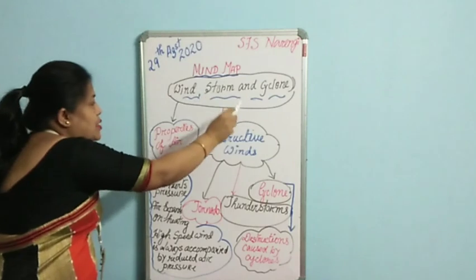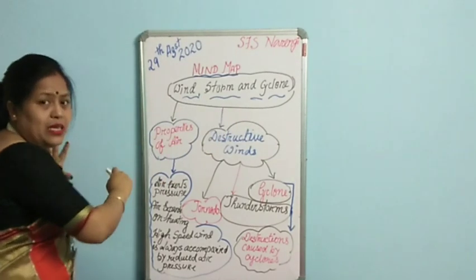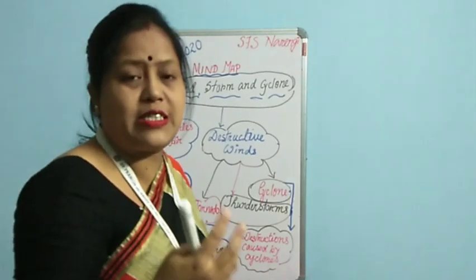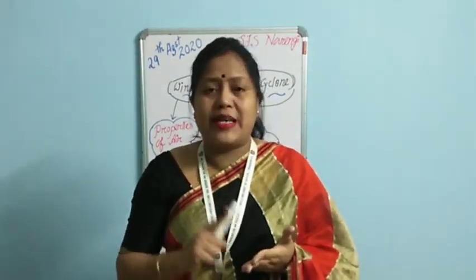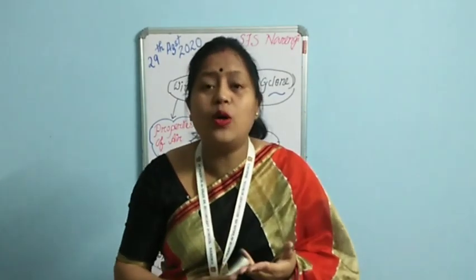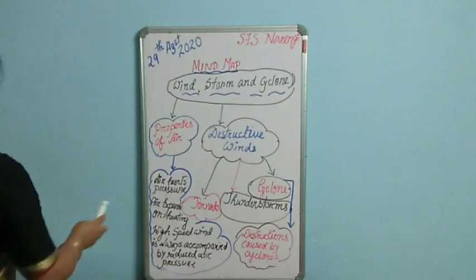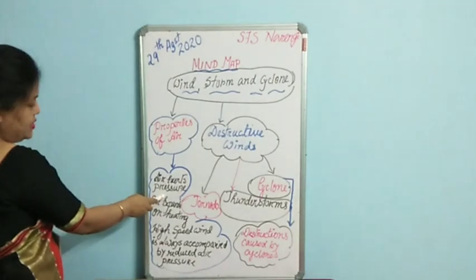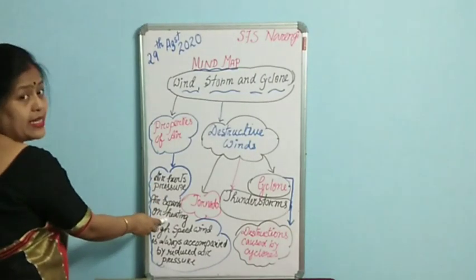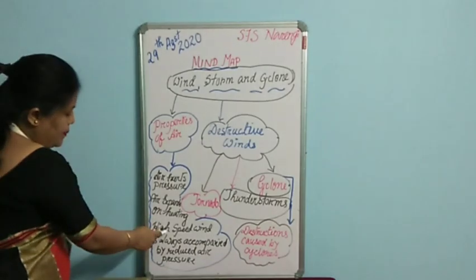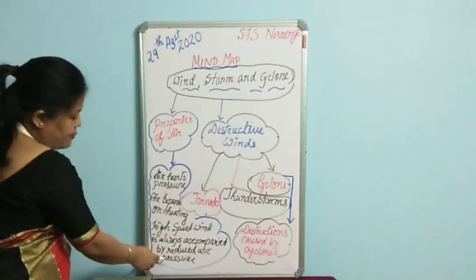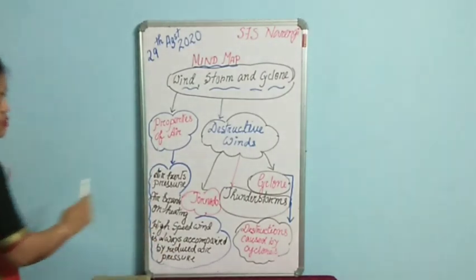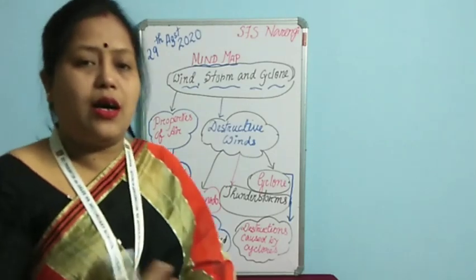First in this chapter we started with the properties of air — the characteristics of air. In that topic we discussed three different characteristics. The first characteristic was that air exerts pressure. The second is air expands on heating. And the third was that high speed wind is always accompanied by reduced air pressure. So let us discuss all three characteristics of air.